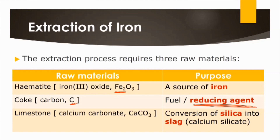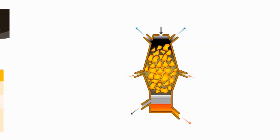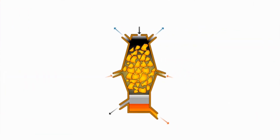Limestone, which is calcium carbonate, is involved in a process that helps to convert silica into slag, which is calcium silicate. We'll talk more about these individual functions in the next few slides. Before we look at the specific reactions in the blast furnace, we need a general idea of how it works.